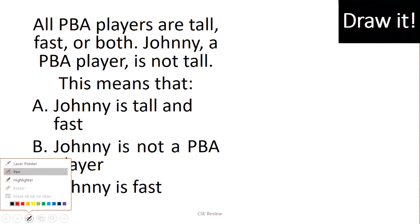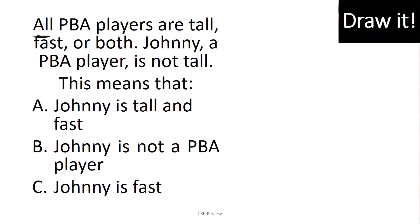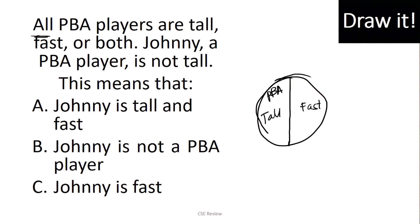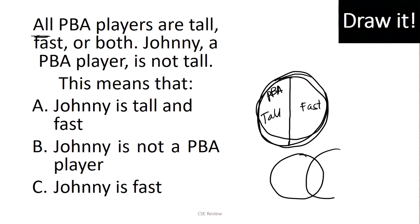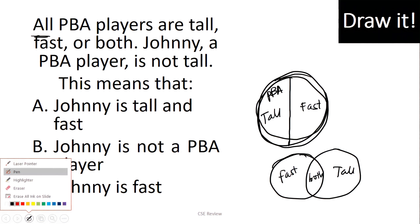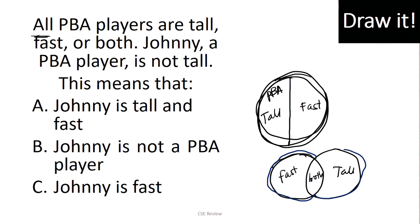Let's try the next one — I'll challenge you to solve it yourself first. All PBA players are tall, fast, or both. So if you are a PBA player, you have to be tall, fast, or both. When you draw it, PBA players fit inside a region that covers: fast only, tall only, or both. The blue shaded region represents all the PBA players.